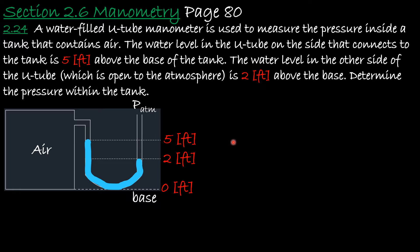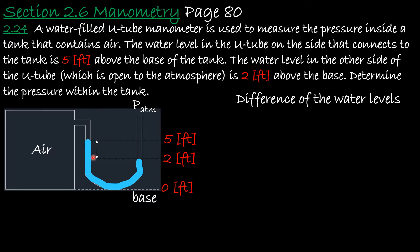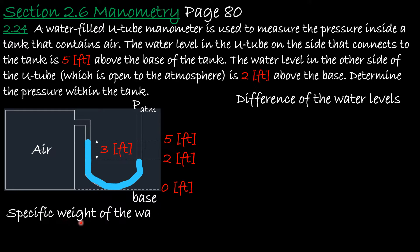We want to find the pressure of the air, and we can know it from the difference of the water levels, which is 3 feet. To use this, it is helpful to know some properties of water, specifically the specific weight of water. You can find it from any reference table or online. It is 62.4 lb/ft³.